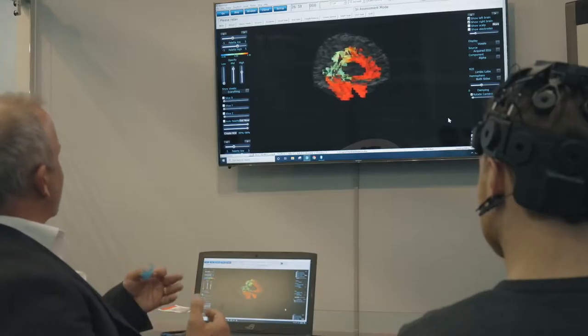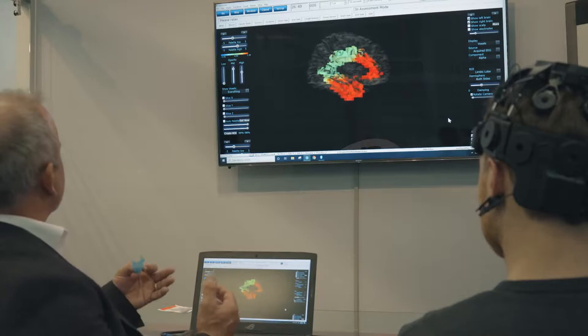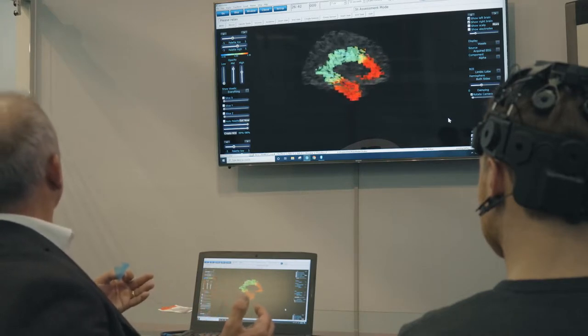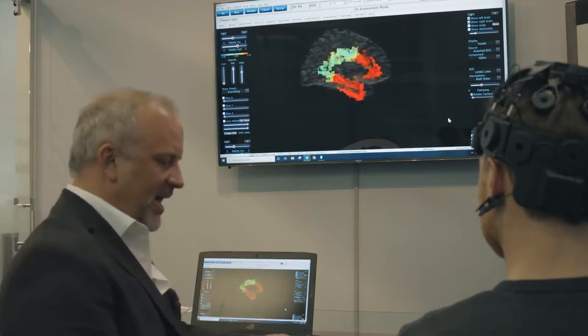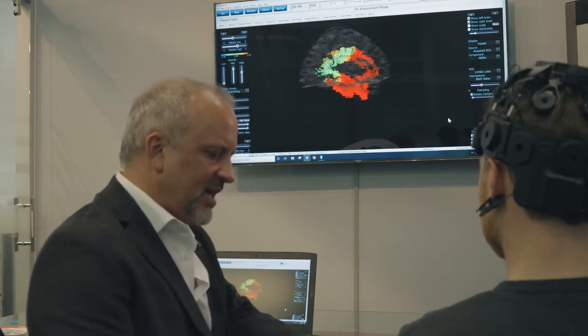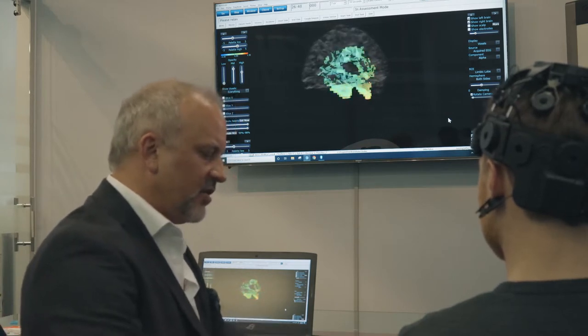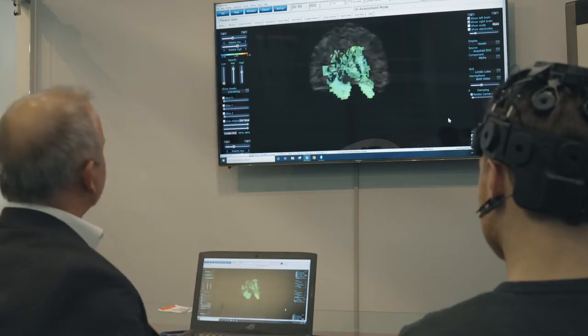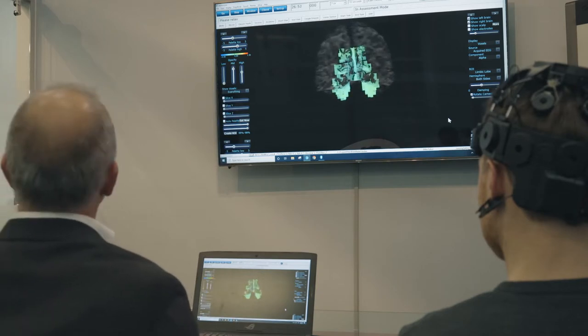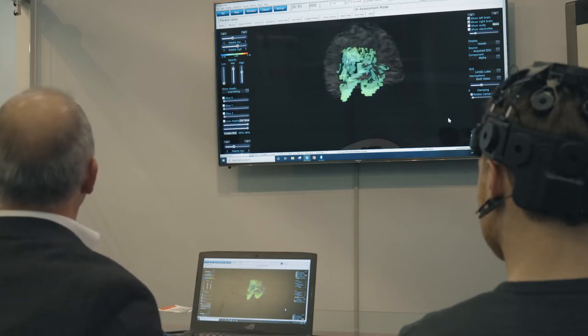So for stress and anxiety, we see this limbic system is over half red. So now what I'm going to do is I'm going to put the patch on and as we put that patch on, we're going to see the brain calm down and that limbic system turn green.